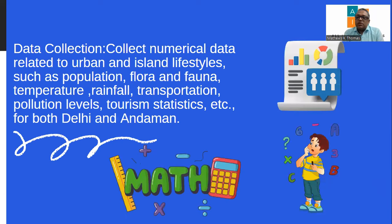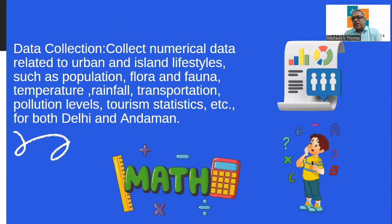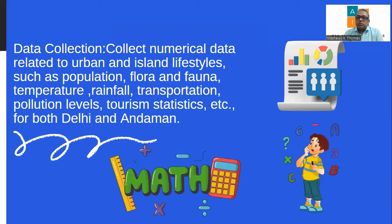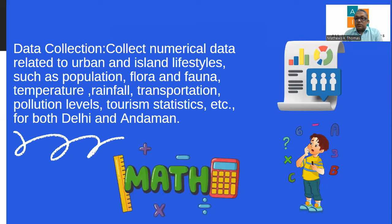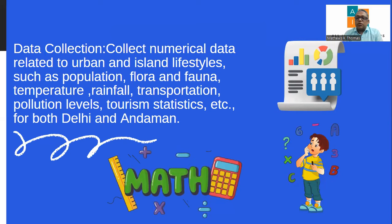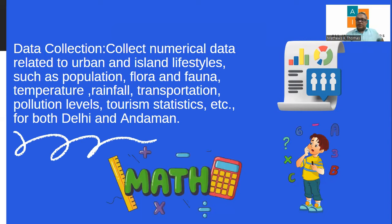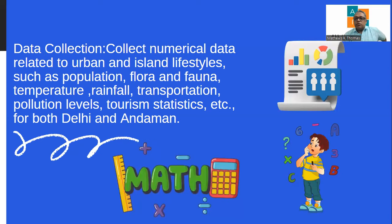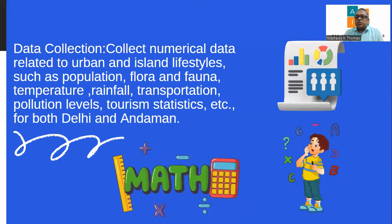The next step is to collect data. You can use Google, Wikipedia, or books dealing with these two places. You can collect information about temperature, rainfall, transportation, flora and fauna, pollution levels, and tourism in different months. All this can be collected from any source — you can use Google Bard, ChatGPT, any AI apps, or a Google search. Select about three to four things about both places and then compare them.